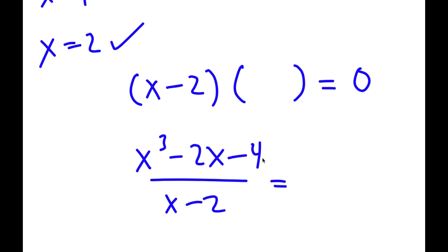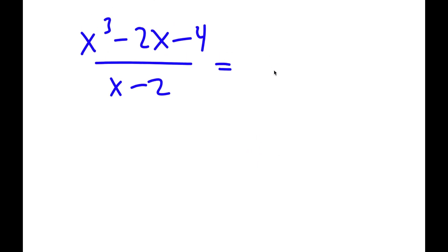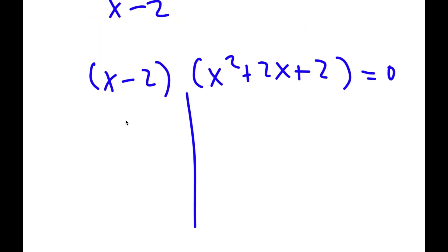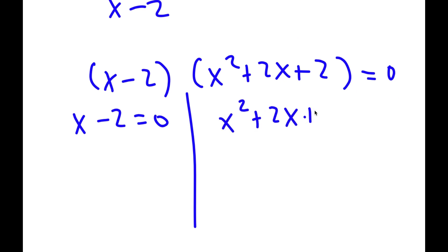You can solve this division using long division or the synthetic division method. The result is x squared plus 2x plus 2. So now I have x minus 2 times x squared plus 2x plus 2 equals 0, which gives me two equations: x minus 2 equals 0, and x squared plus 2x plus 2 equals 0.